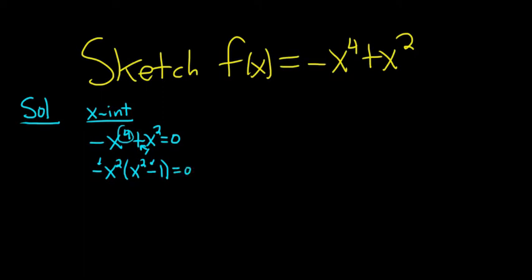We can factor this further. So we get -x^2(x - 1)(x + 1) = 0. Then here we get three different answers: we get zero, we get 1, and we get -1.